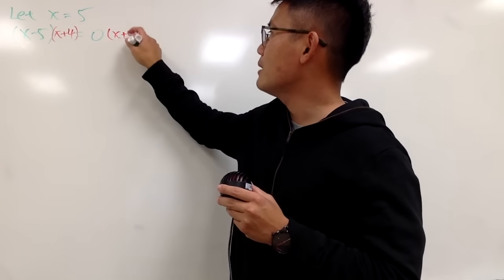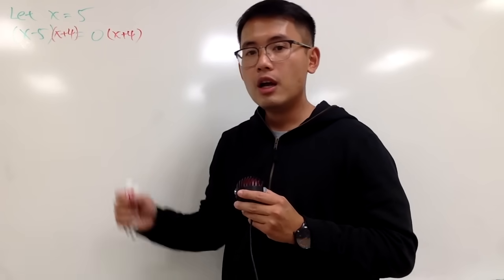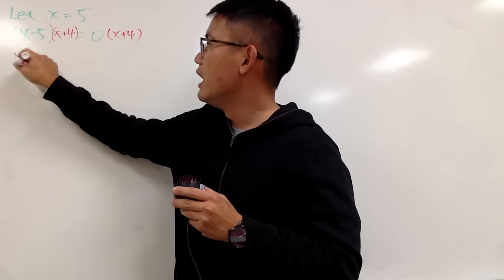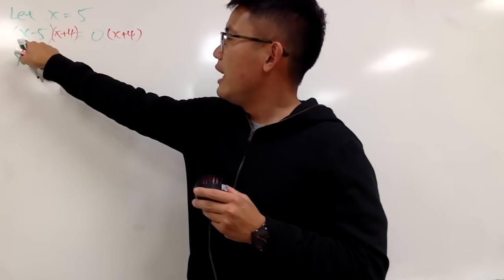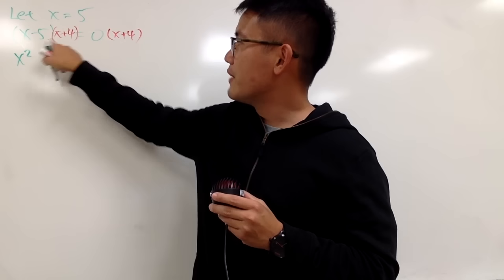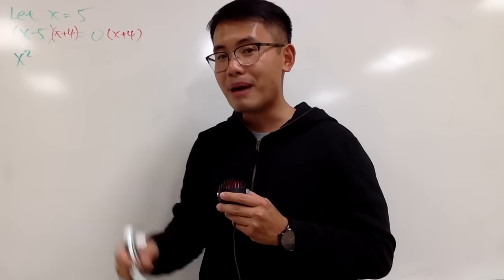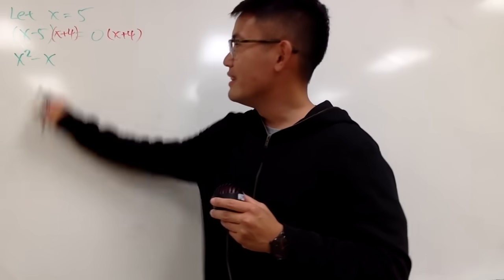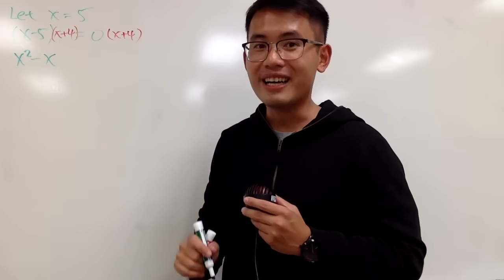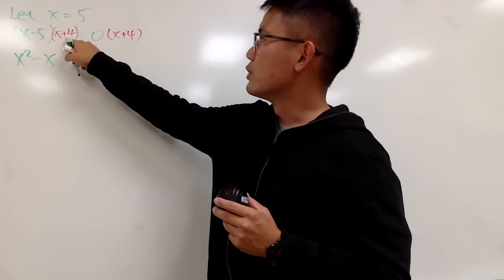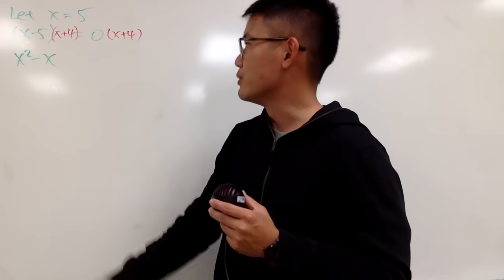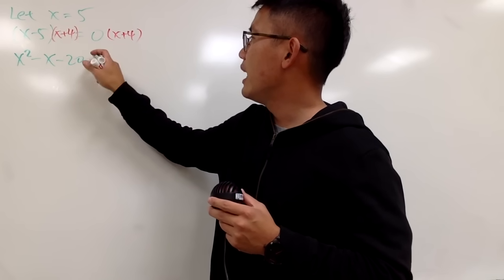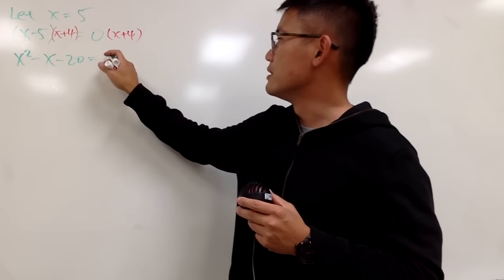Let's multiply x plus 4 on both sides. When you multiply this out, you get x squared, then 4x minus 5x, which combines to give a nice negative x. And then negative 5 times 4 is negative 20. On the right-hand side, this times that is just 0. So now you have a quadratic equation.